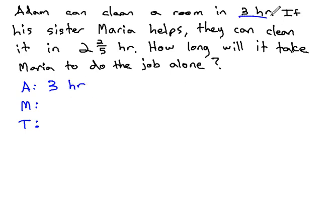We're given that. We're also told that if his sister Maria is helping as a team, they can do it in two and two-fifths hours. Now, we don't really like doing math with mixed numbers, so let's change that into an improper fraction. Five times two is ten, plus two is twelve, so it takes twelve-fifths hours for them to do it as a team.